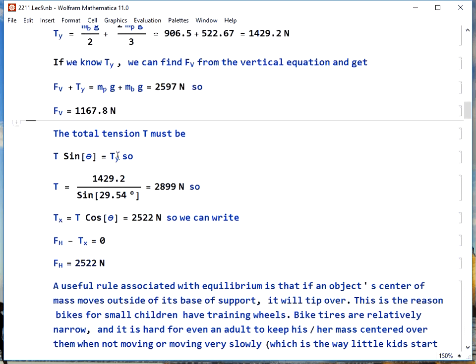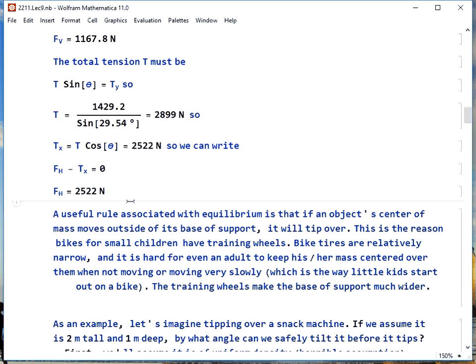The total tension, we have to have that T sine theta is Ty. So the total tension must be 2,899 newtons. And finally, we can plug it into our first equation and see that FH is FV.